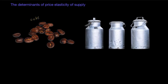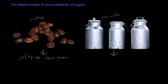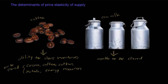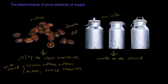Here we have two primary commodities: coffee beans on the left and raw milk on the right. Primary commodities tend to have a relatively inelastic supply, but what about when we compare two different types? One big difference is that coffee can be stored in warehouses. Primary commodities such as cocoa, coffee, cotton, metals and minerals, and energy resources can actually be stored for longer periods of time. The supply of these storable commodities will be relatively elastic compared to raw milk.